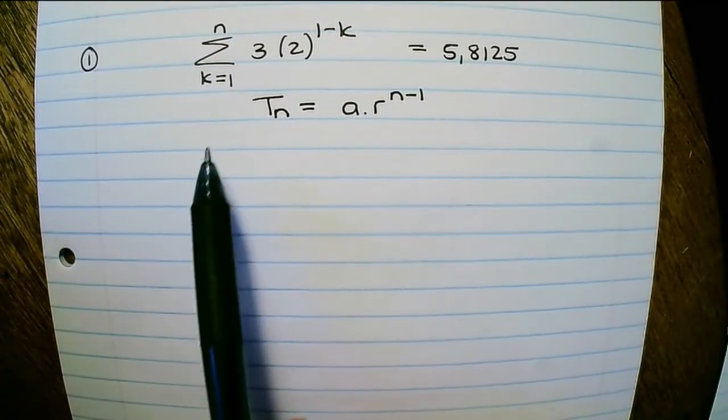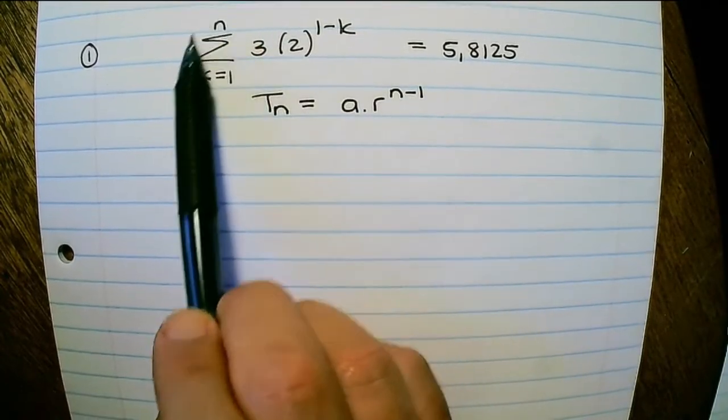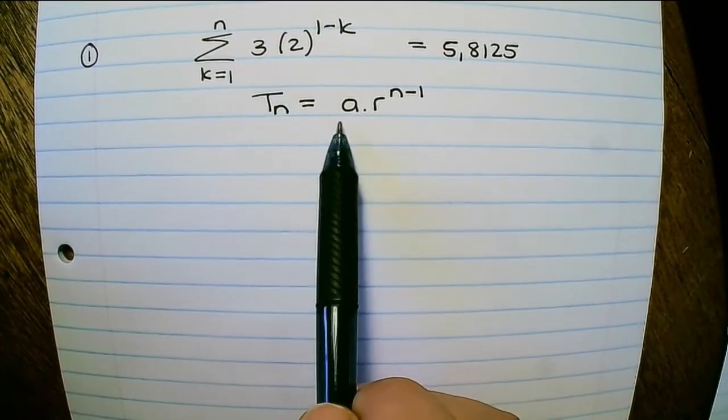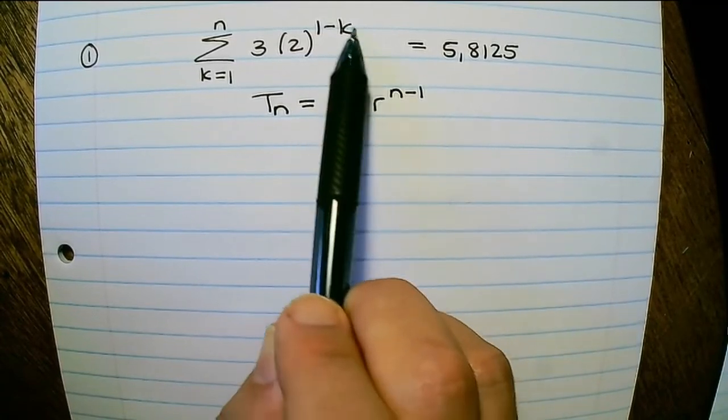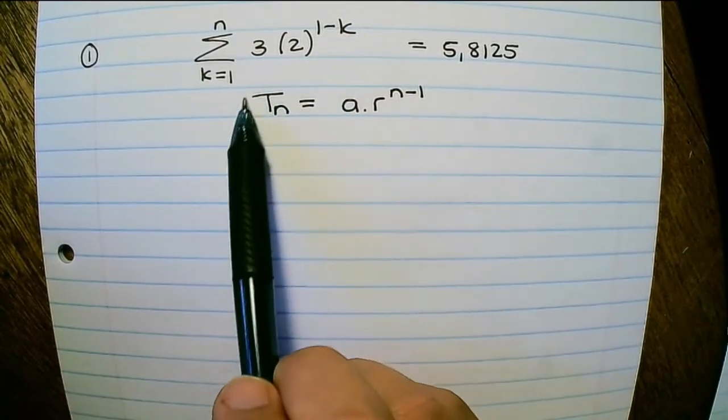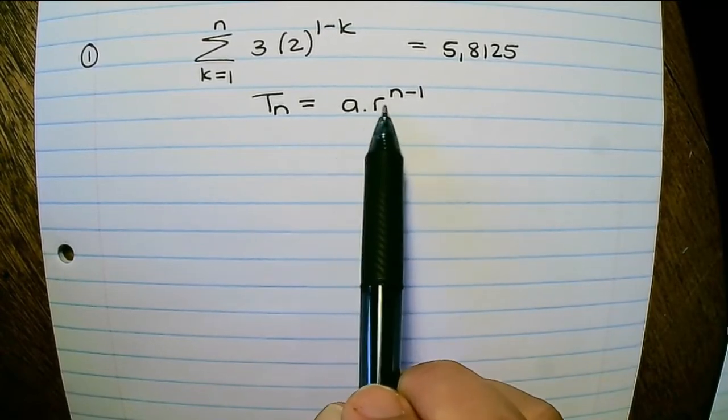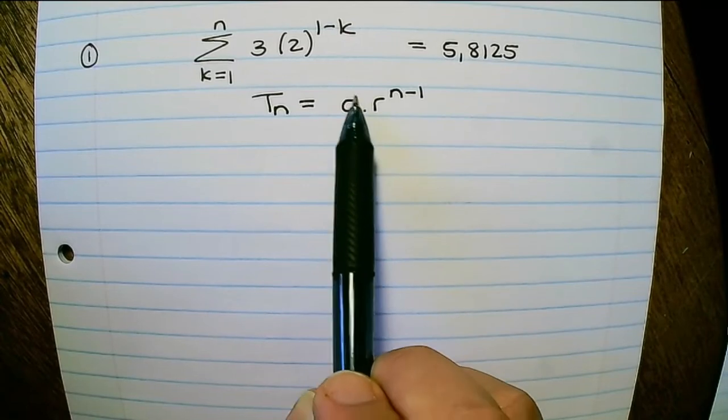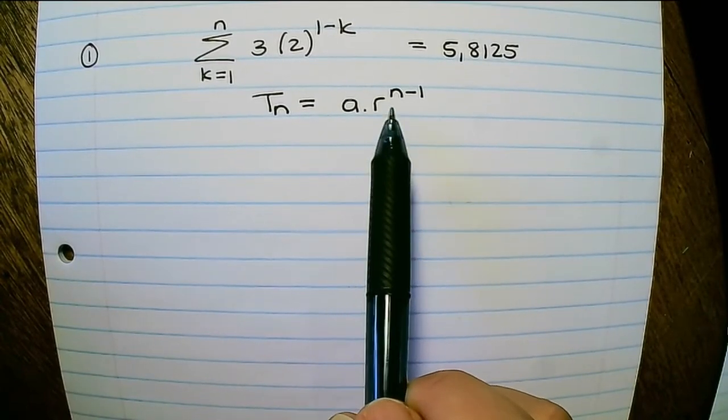So let's start by identifying that the content of the sigma notation looks like a geometric pattern. And in order to find the sum of geometric terms, we need to determine the a value and the r value. a is the first term and r is the constant ratio between terms.